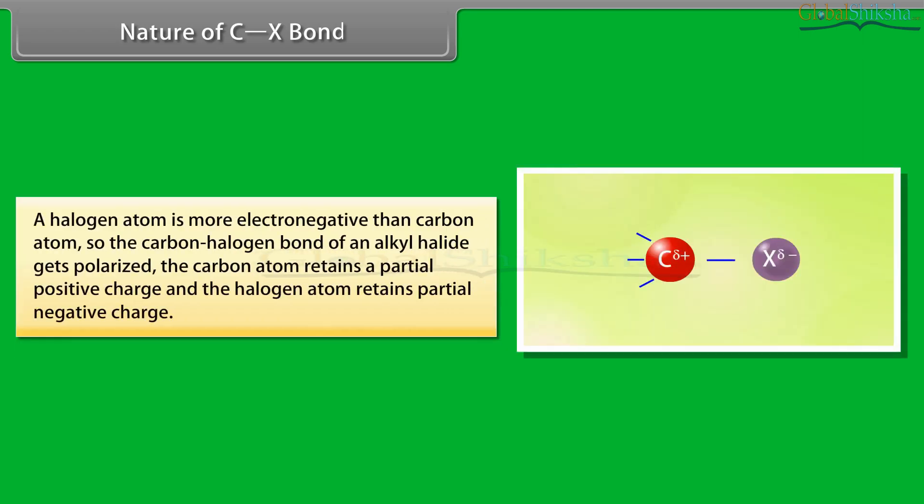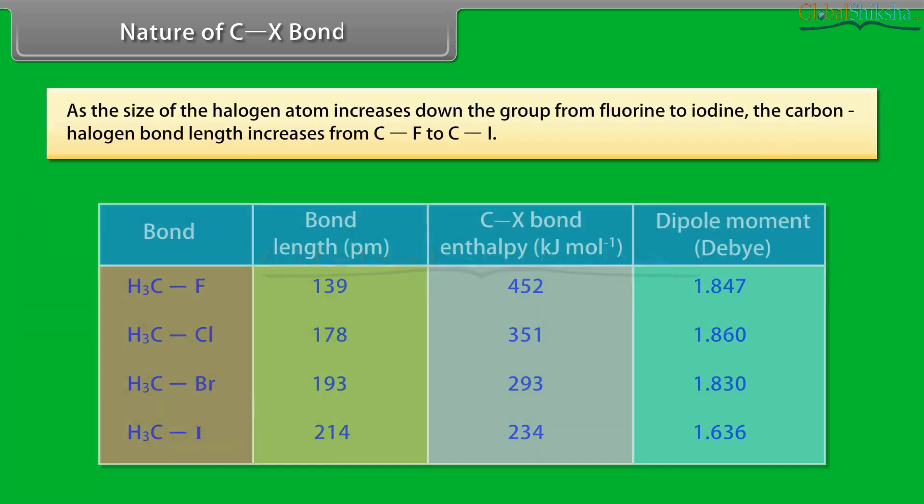A halogen atom is more electronegative than carbon atom, so the carbon halogen bond of an alkyl halide gets polarized. The carbon atom retains a partial positive charge, and the halogen atom retains a partial negative charge. As the size of the halogen atom increases down the group from fluorine to iodine, the carbon halogen bond length increases from C-F to C-I.